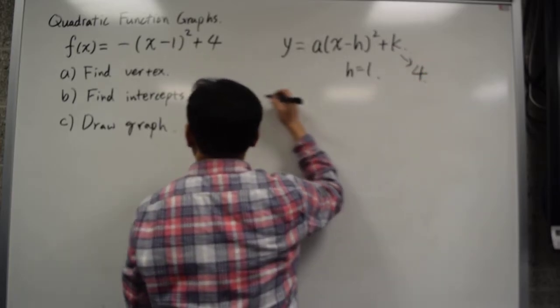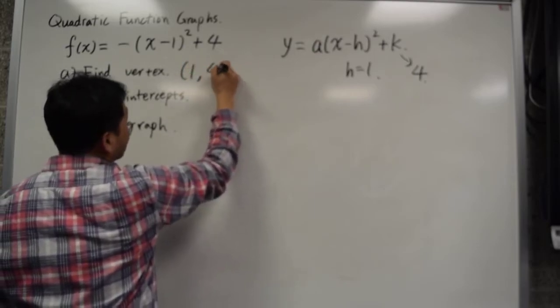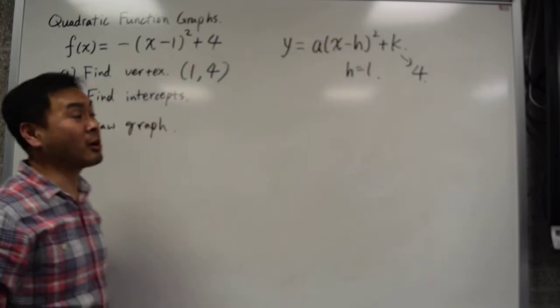That means the vertex is at 1, 4. Because if you have the vertex form, the vertex is at h, k.